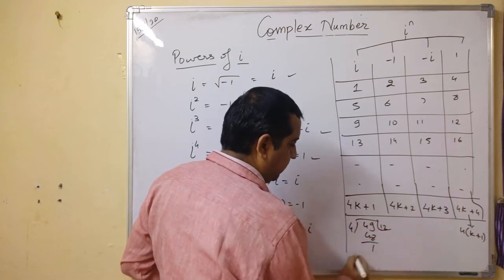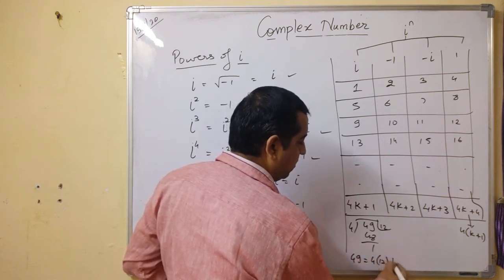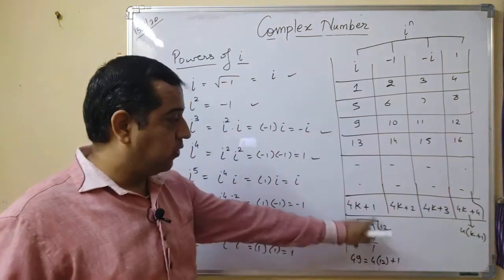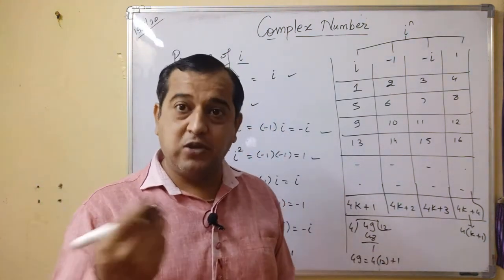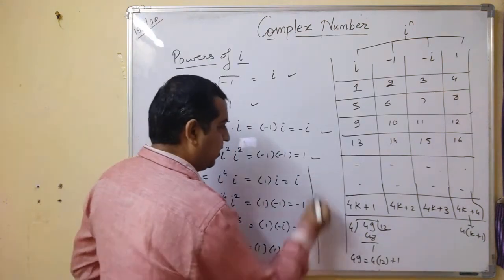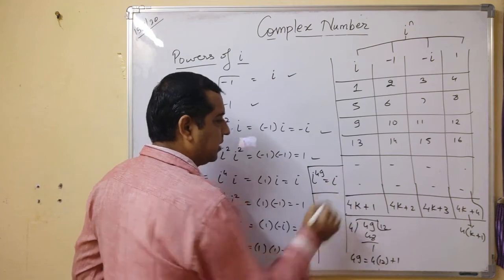For i⁴⁹, we can write this as 4 times 12 plus 1. This is 4k+1 form, so remainder is 1. So when you have i⁴⁹, the answer will clearly be i.